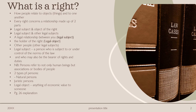There are four classes of rights in terms of private law. We deal with public law and private law. These are the four classes of rights in terms of private law. We find out the kind of right by finding out what the object of the right is.